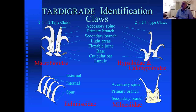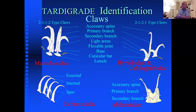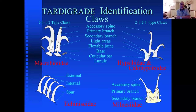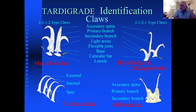The claws are also a key identification feature. On a given tardigrade you might see a pattern described as two-one-two — two long claws, one smaller, two tiny ones. There are accessory spines, primary branches, and oddly-shaped secondary claws. Even a tiny spur at the very bottom of a claw is enough to identify a different species. When you look at tardigrade pictures in articles, pay attention to the claws — you'll immediately see how distinct they are.